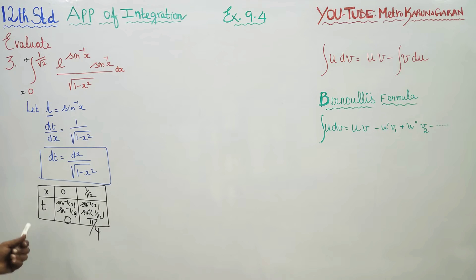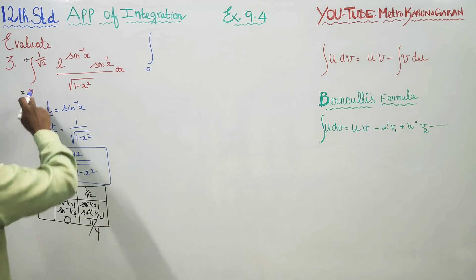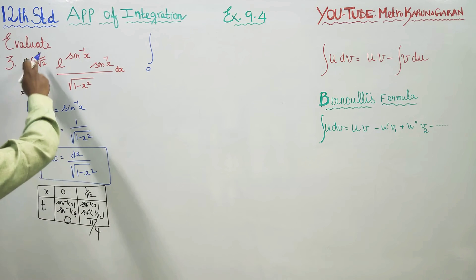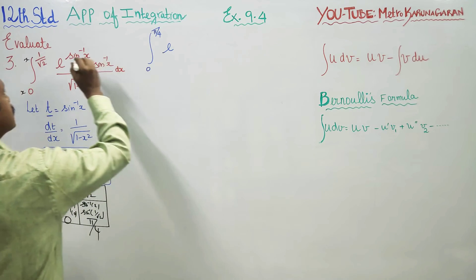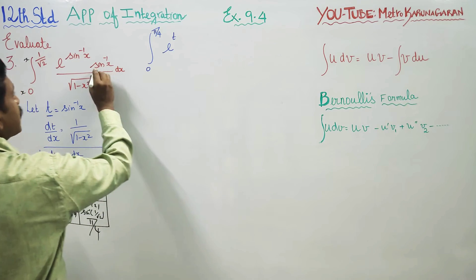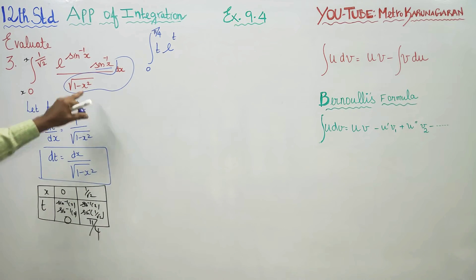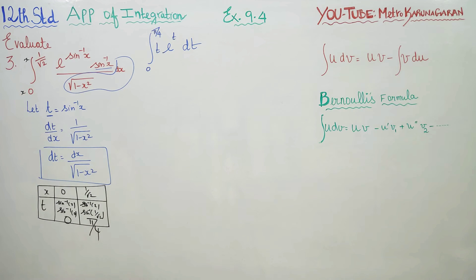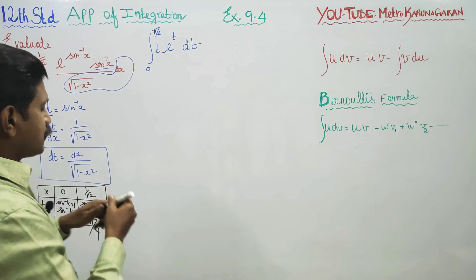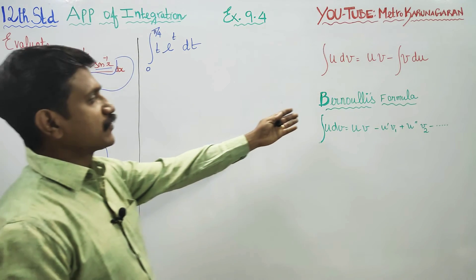After changing the limits, sin⁻¹x becomes t, and dx/√(1 - x²) becomes dt. Everything substituted, the new sum will be the integration of e^t dt from 0 to π/4. The original sum has been simplified and transformed into an easy form, so now you can go for Bernoulli's formula.